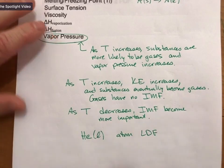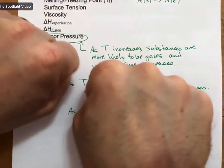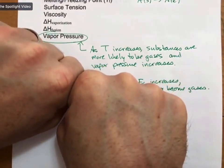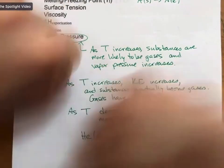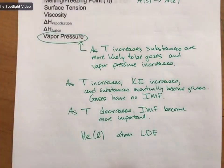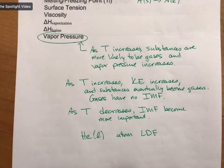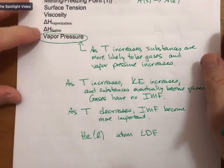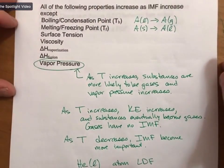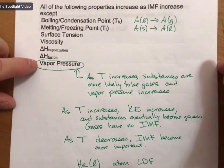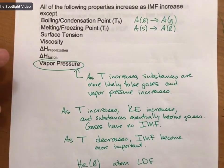So IMF tends to hold materials together, while temperature tends to break them apart. At high enough temperatures, everything — even metals — becomes a gas, as gases exist inside stars. The key takeaway is that vapor pressure is different from the other properties: the higher your vapor pressure, the lower your intermolecular forces are. Any questions about that?